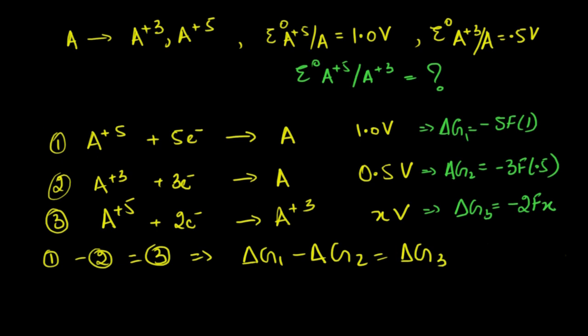These are delta G values of reactions 1, 2, and 3. Delta G is a property of this reaction, directly true for this reaction. As we learned in thermodynamics, if reaction 1 minus reaction 2 equals 3, this implies ΔG₁ - ΔG₂ = ΔG₃. Why? Because delta G is an extensive state function. If subtracting reactions 1 and 2 gives reaction 3, then subtracting their extensive state functions gives reaction 3's extensive state function. So -5F(1) - (-3F(0.5)) = -2Fx. Cancel F and divide by minus.